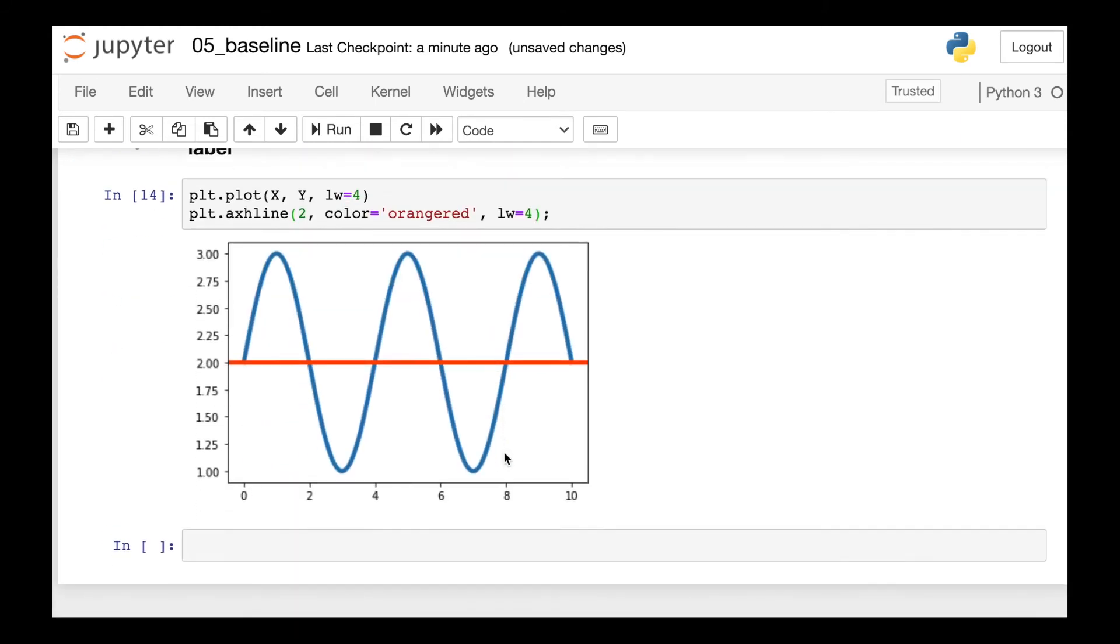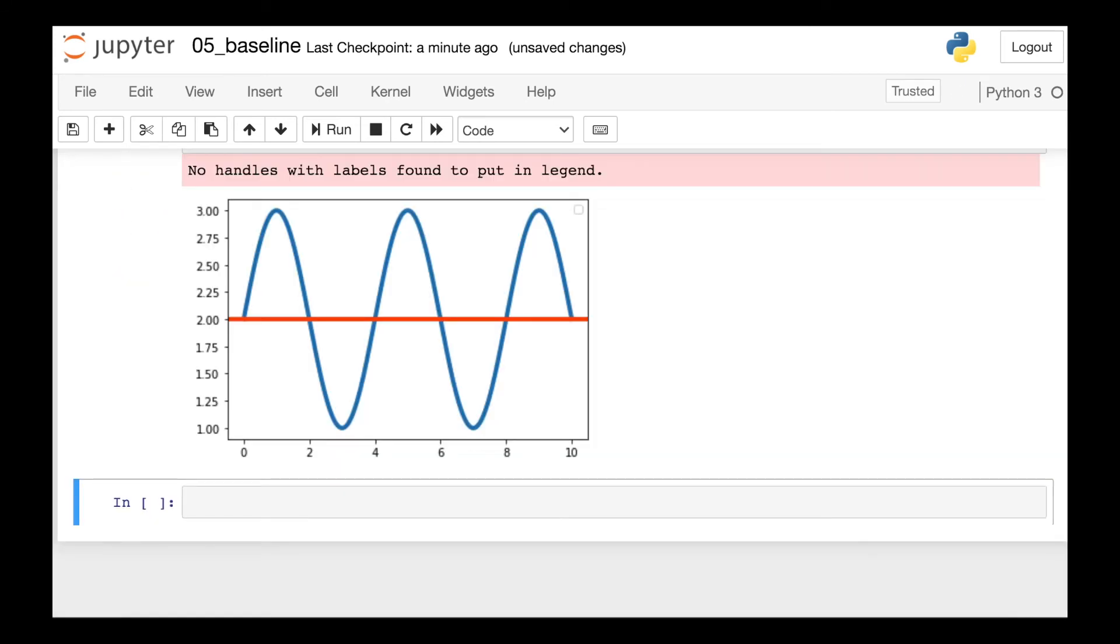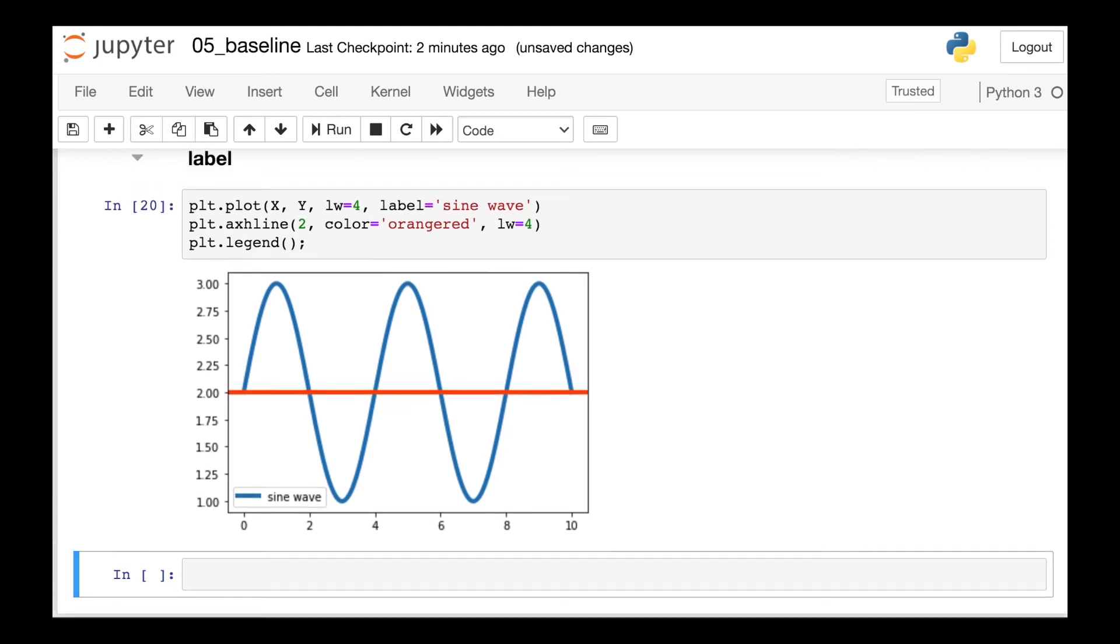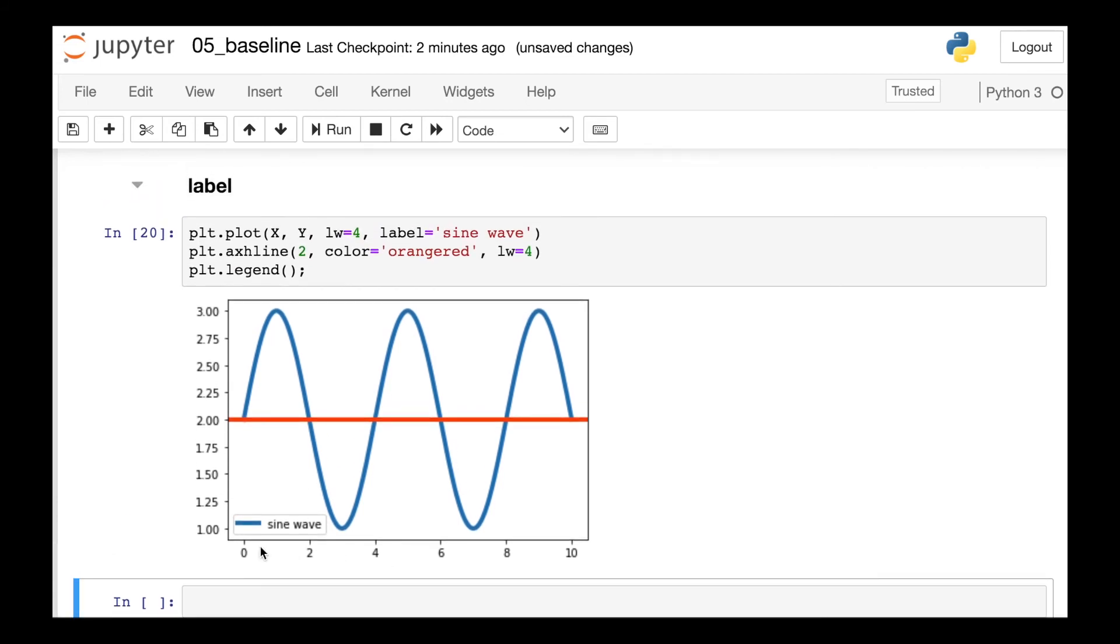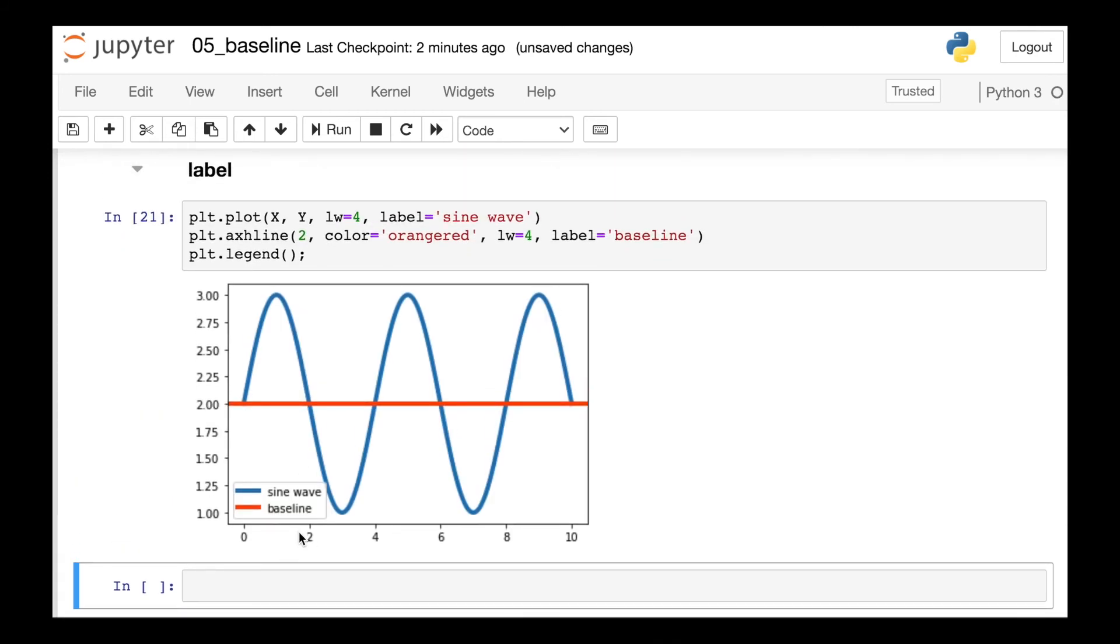So as we are adding more and more lines to our figures, we may want to also add in a legend. But if we do this directly, you'll see Matplotlib gives us an error. It does not know what those lines should be called. So we need to label them. We do this with this label property. And first off, I'll just label the sine wave and then I'll label the baseline. Now you'll see both sine wave and baseline show up in my legend.